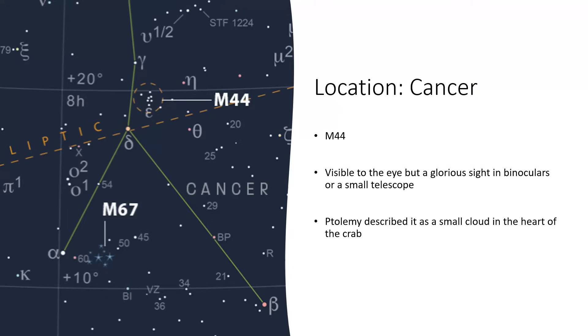Ptolemy described it as a small cloud in the heart of the Crab. I guess he had very much better skies than we do.